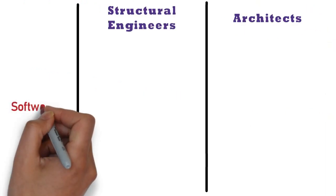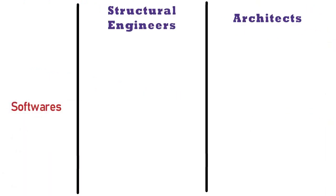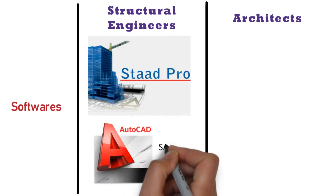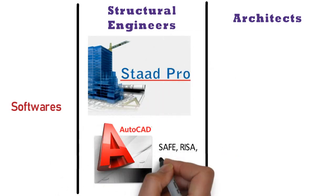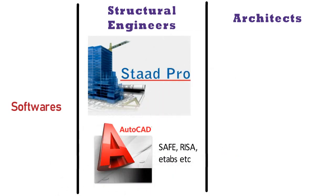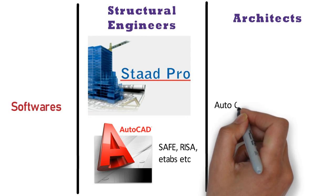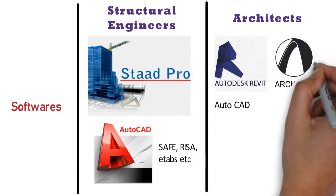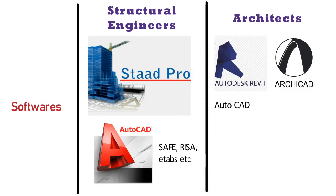Softwares: The basic softwares used by structural engineers are STAAD PRO, AutoCAD, SAFE, RISA, and ETABS. Whereas the basic softwares used by architects are AutoCAD, REVIT, ARCHICAD and other building information modeling softwares.